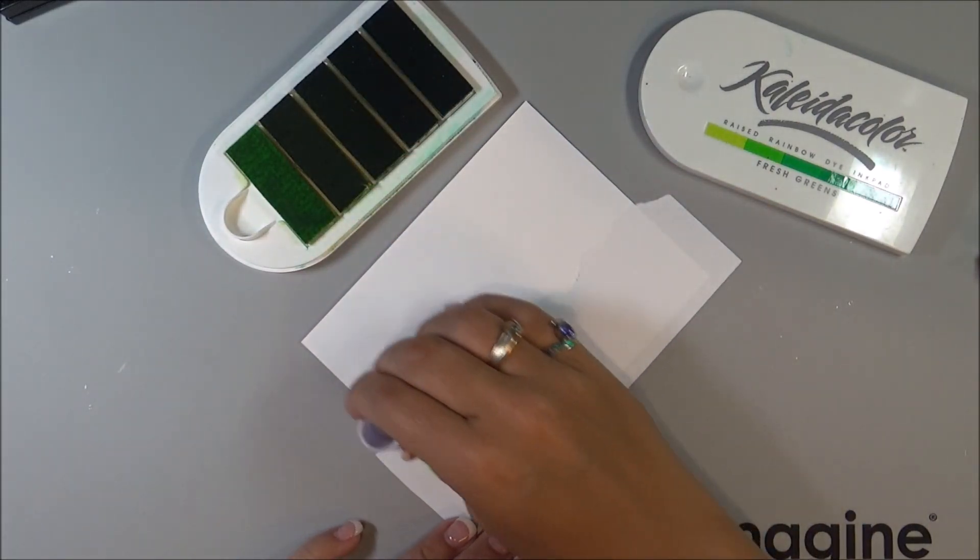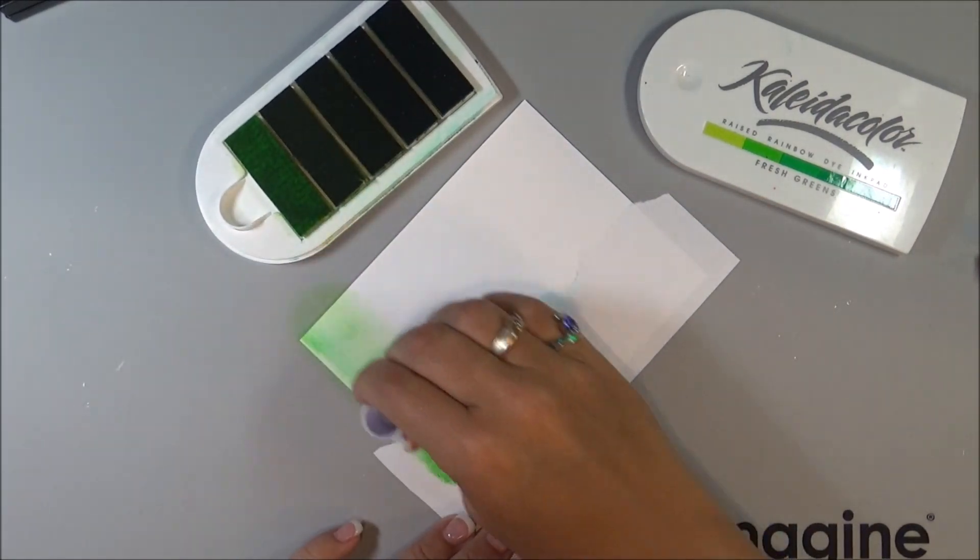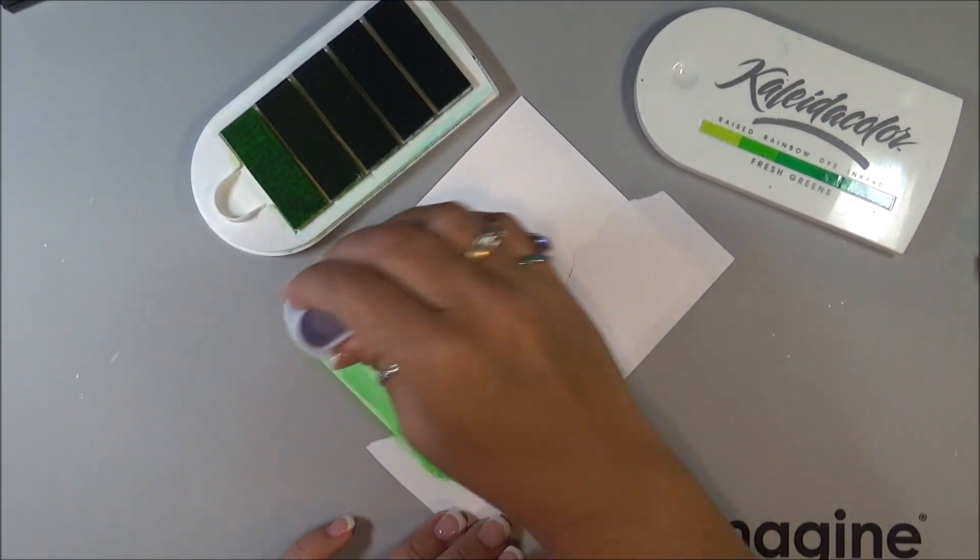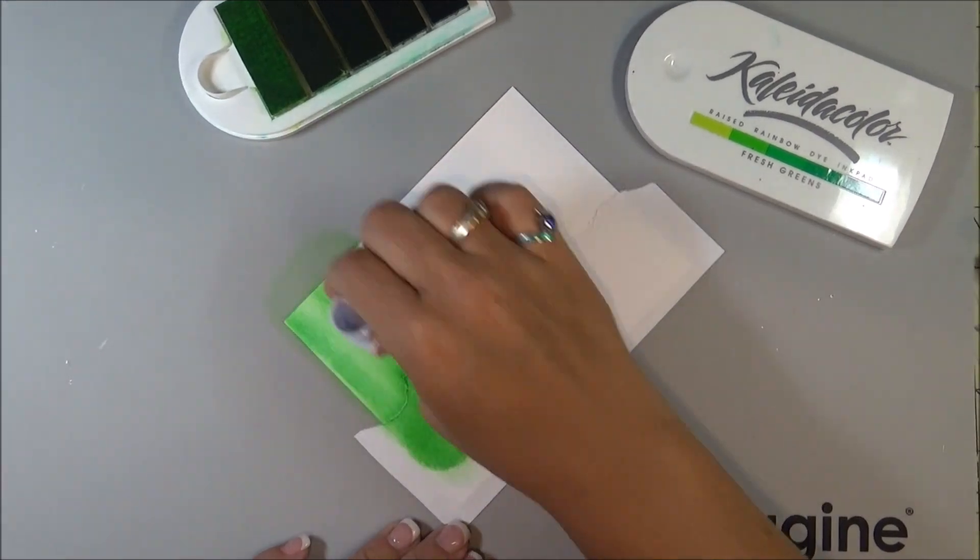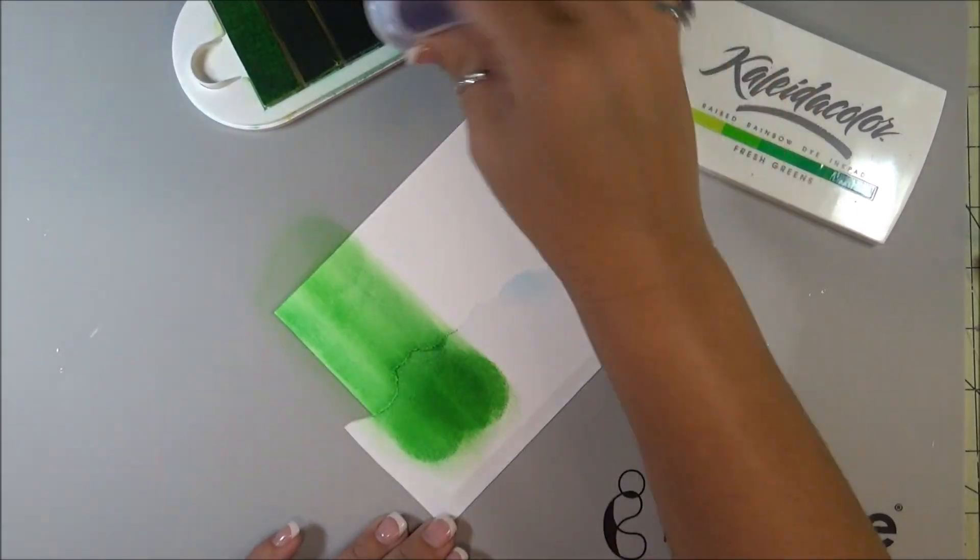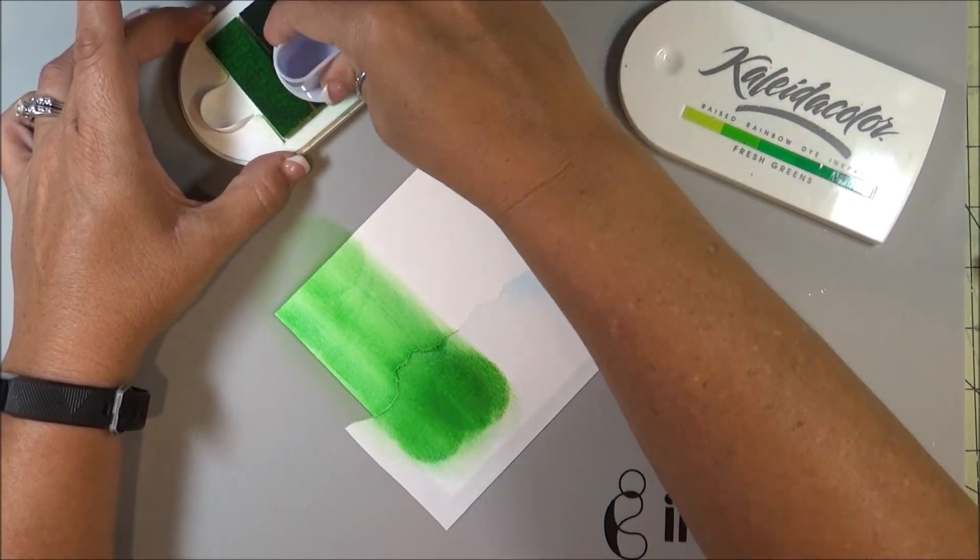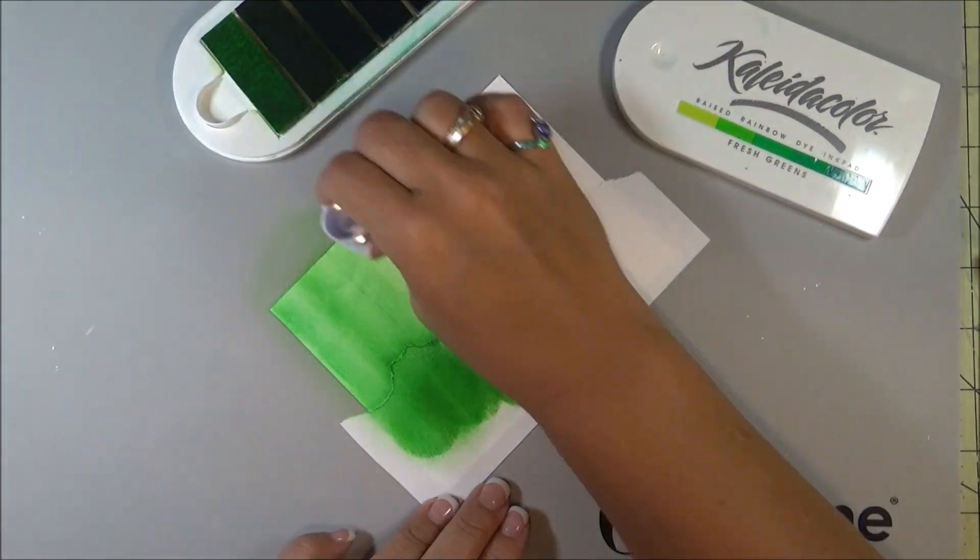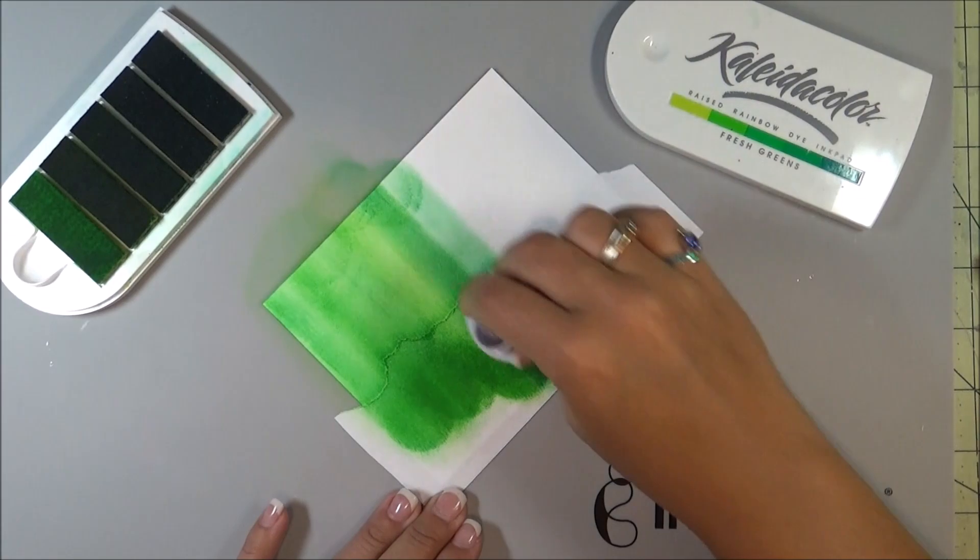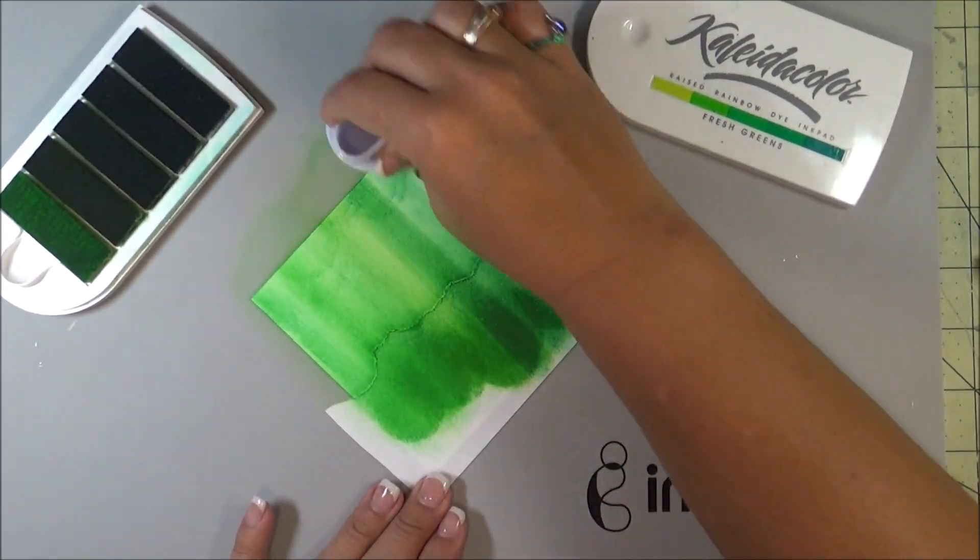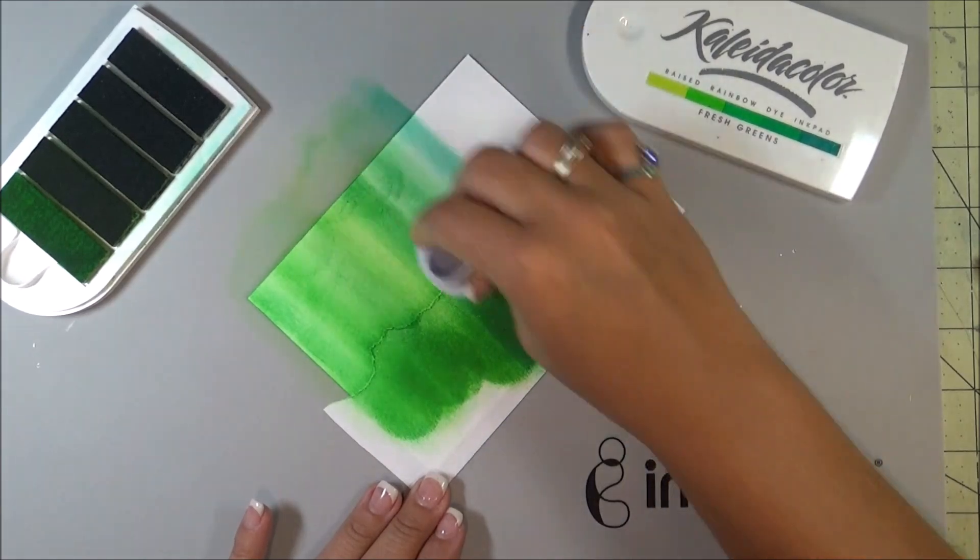And then I'm just going to run it up like this on the card, and then using the next two colors, I'm going to do the same thing, and then just repeat the process all the way to the end.